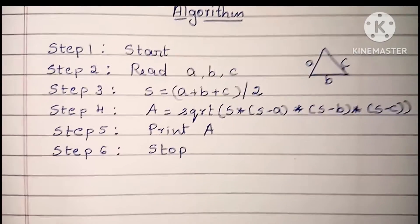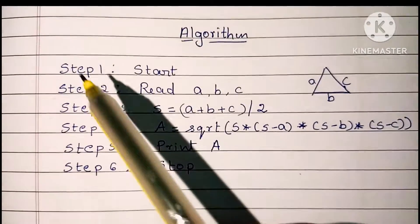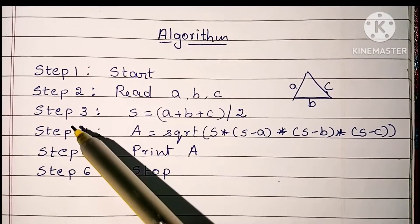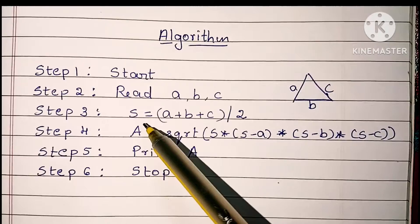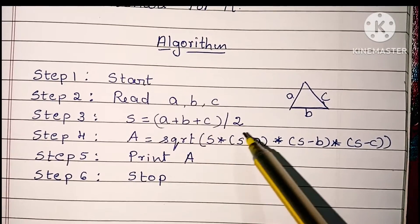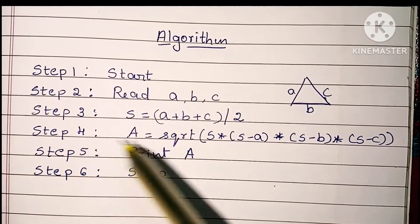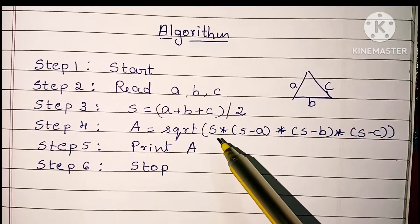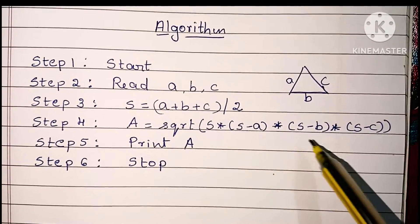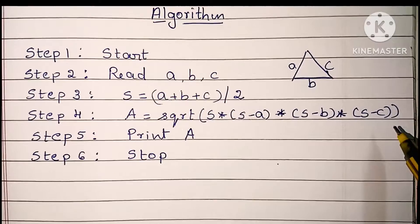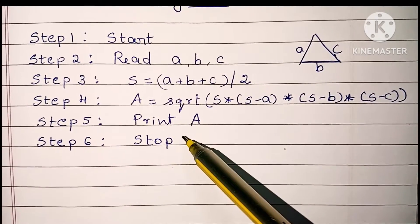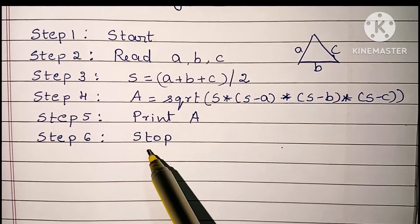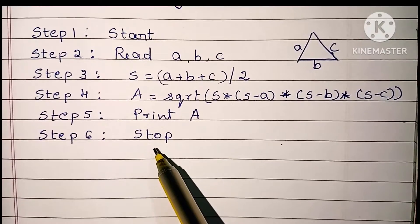So this is the algorithm: Step 1 — start statement. Step 2 — read a, b, c. Step 3 — calculate semi-perimeter: s equals a plus b plus c divided by two. Step 4 — calculate area of triangle: A equals square root of s into (s minus a) into (s minus b) into (s minus c). Step 5 — print A, the area of the triangle. Step 6 — stop the algorithm using the stop statement.